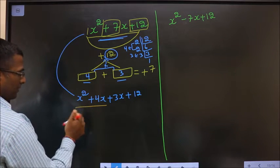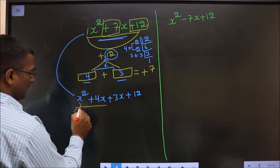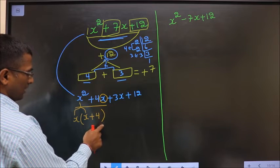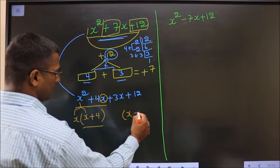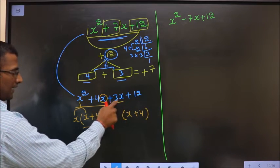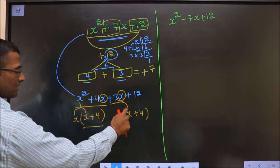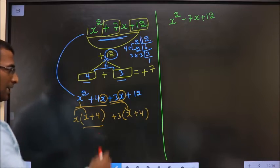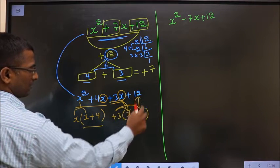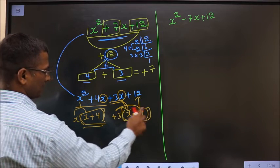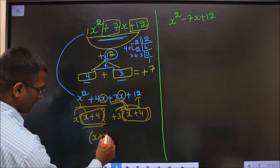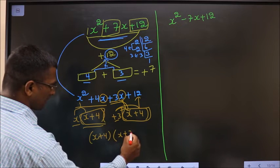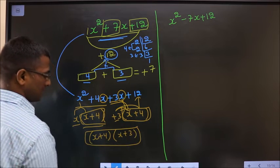What can I take common from the first two terms? x. From x squared, one x is taken out, leaving x inside; the other factor is x plus 4. So here also you should get x plus 4. From 3x, x is taken out, leaving plus 3 outside. Now take the bracket x plus 4 common — left with x and plus 3. Thus we have factorized; this is our answer.